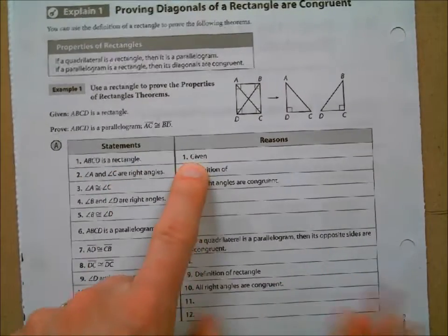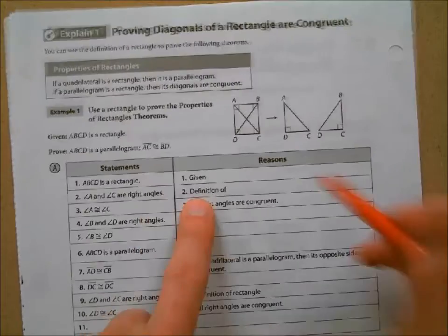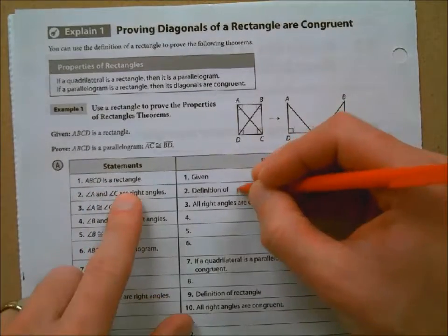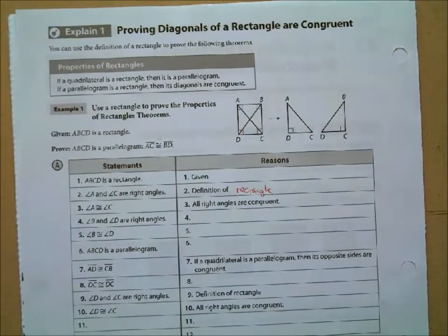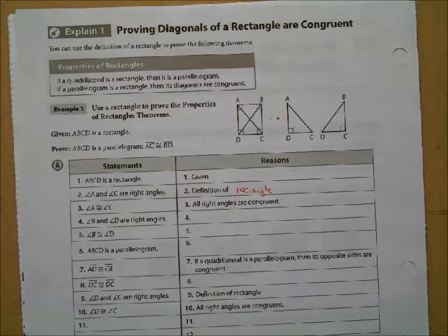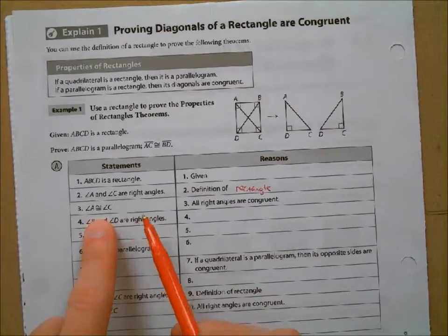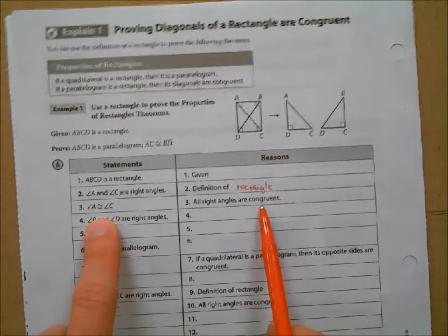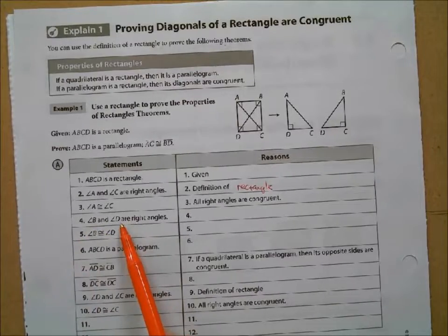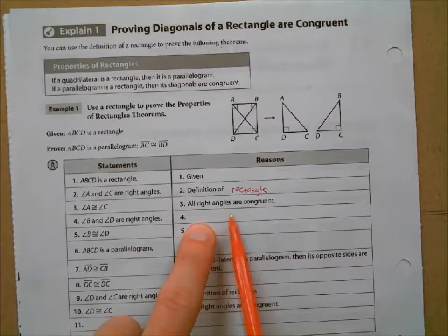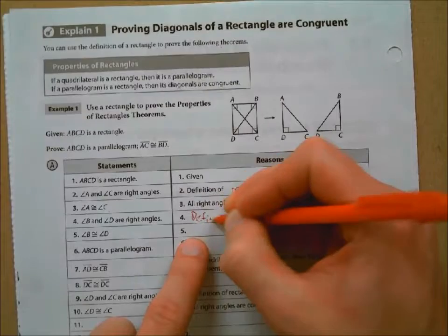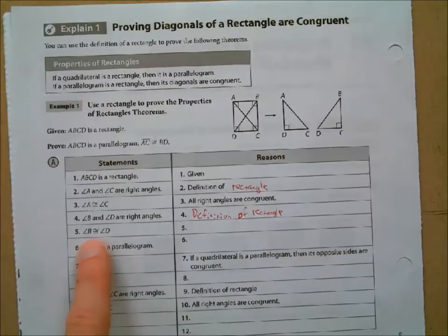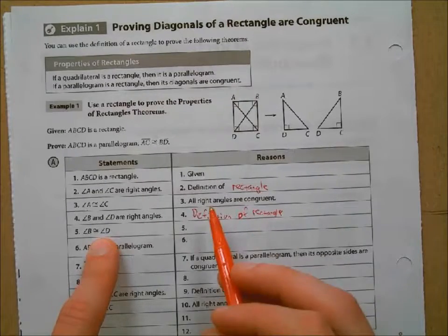ABCD is a rectangle — that's the given. Angle A and angle C are right angles by the definition of a rectangle. We're told this is a rectangle, so it's just the definition: if something's a rectangle, it's got four 90-degree angles. Angle A and angle C are congruent because all right angles are congruent. Then angle B and angle D are right angles, also by the definition of a rectangle, and angle B is congruent to angle D because all right angles are congruent.